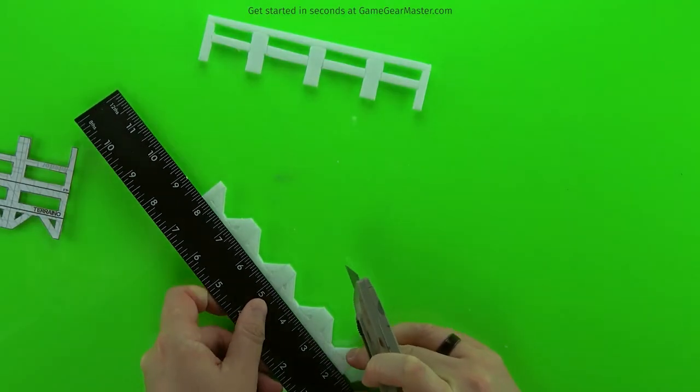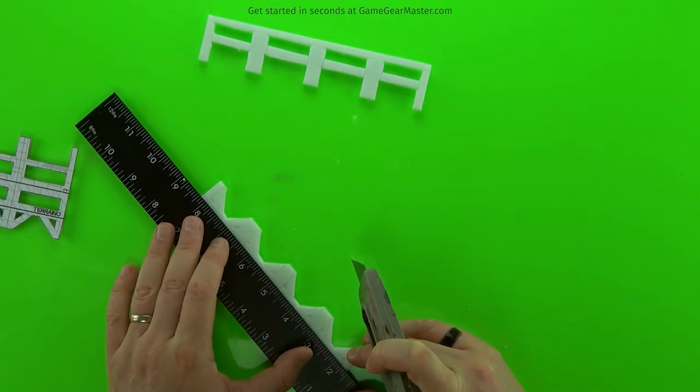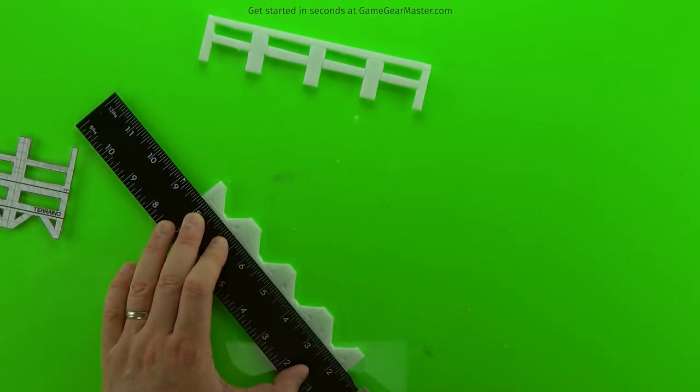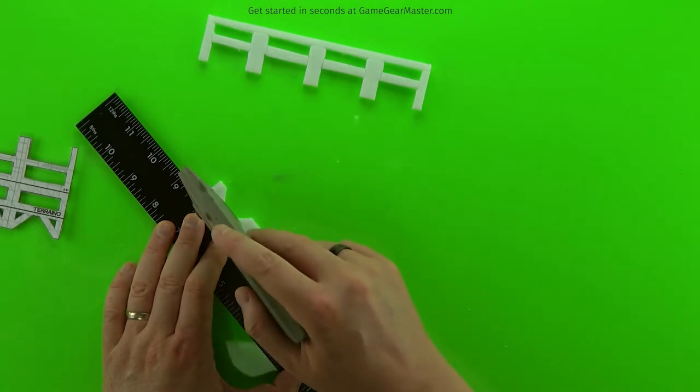Especially on this last one, because there's not a lot of foam holding all those little triangular bits together. The best way is always to do gentle, shallow cuts until you're all the way through. And of course use a sharp blade.